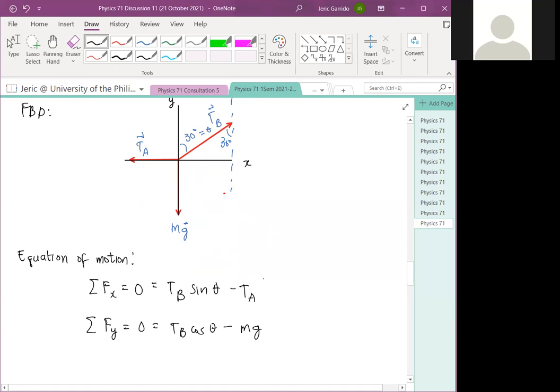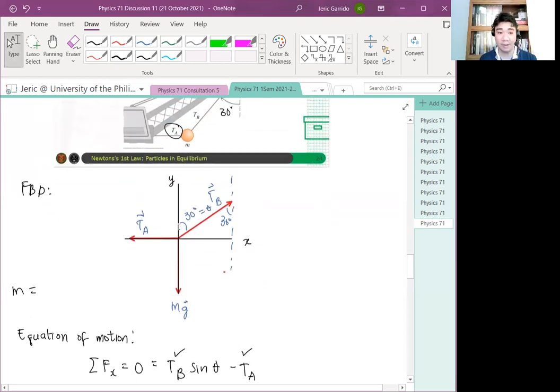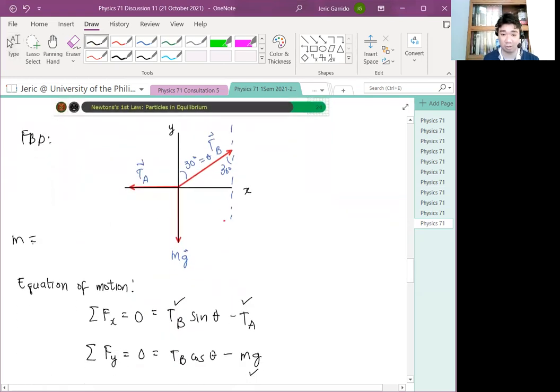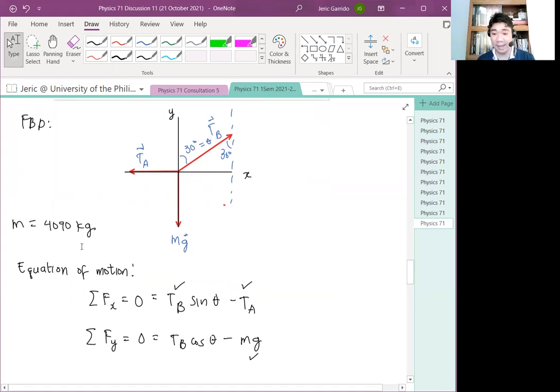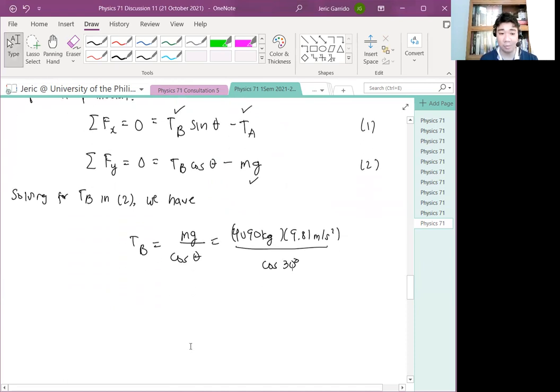And therefore, we need to solve for these two equations. The easier one to find, since TA is unknown, TB is also unknown, but mg is known. That's the weight of the wrecking ball. We can calculate that from the given mass. The mass of the wrecking ball is 4,090 kilograms. Hence, I can use, so this is equation one, equation two. Solving for TB in equation two, we have TB is just equal to mg over cosine of theta. And this is just equal to 4,090 kilograms multiplied by 9.81 meters per second squared over cosine of 30 degrees.